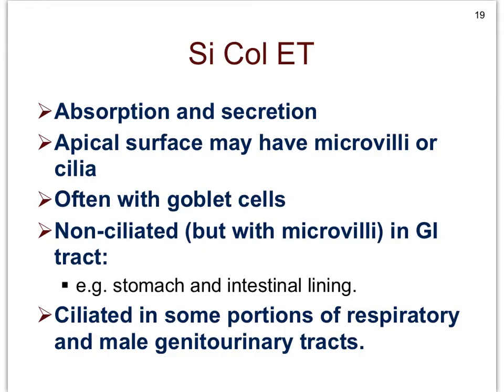Now let's take a look at simple columnar epithelial tissue. It too functions primarily in absorption and secretion — notice that these two functions overlap with simple cuboidal and even simple squamous. What's interesting about simple columnar epithelial tissue is that very often the apical surface of the cells may have either microvilli or cilia — not both. Remember the difference: microvilli convolute the cell membrane to increase surface area, while cilia are little hairs sticking out of the cells.